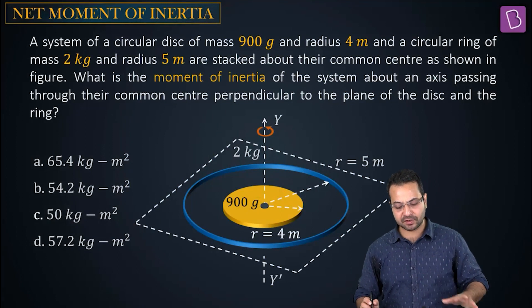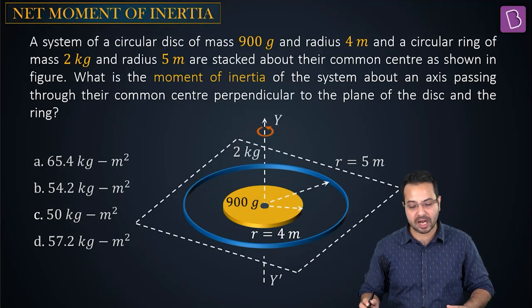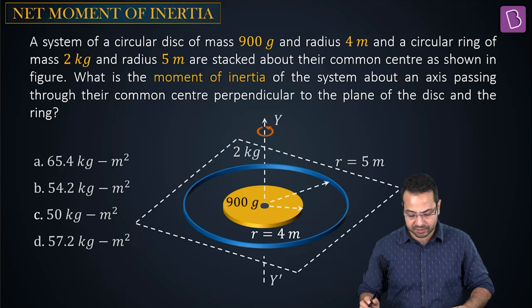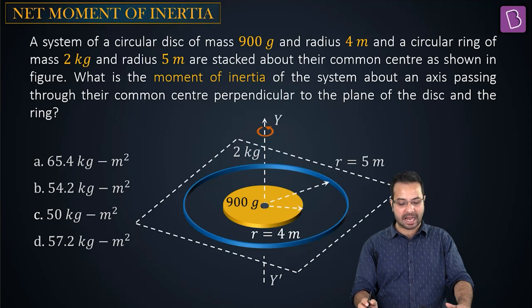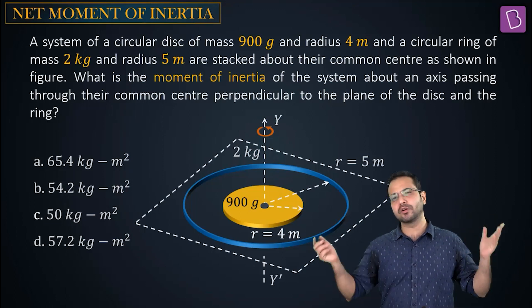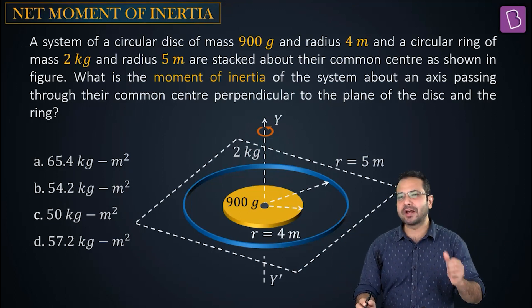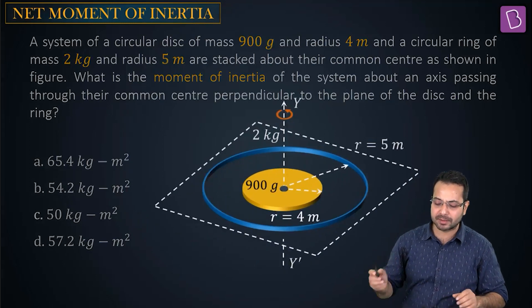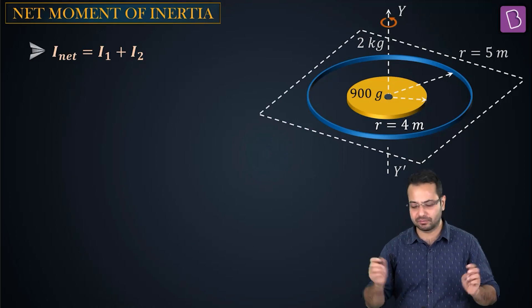A circular disc of mass 900 grams and radius 4 m, and a circular ring of mass 2 kg and radius 5 m, are stacked about their common center. Find the moment of inertia of the system about an axis through the common center perpendicular to the plane. The net MOI is simply I1 plus I2.